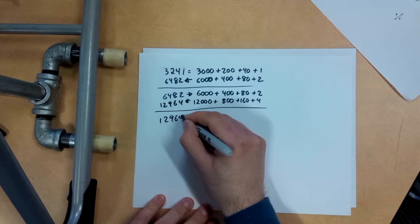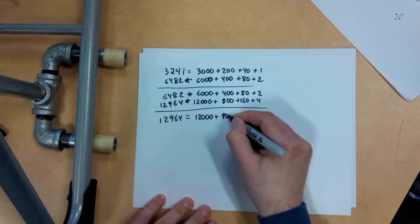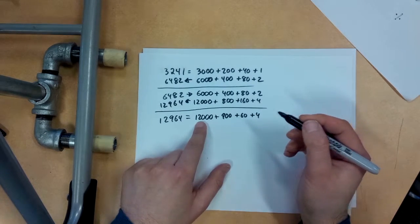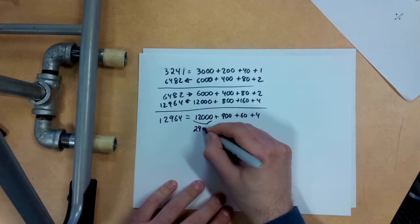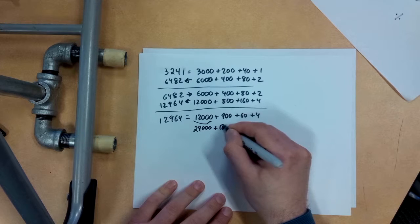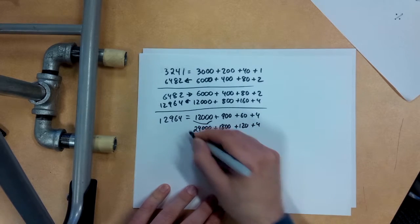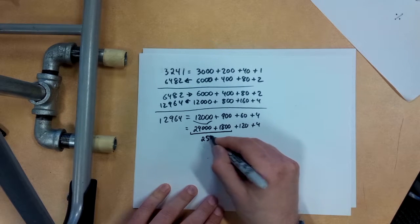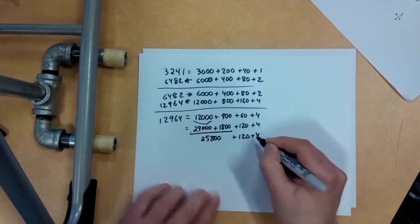I'm going to double that again. 12,964 equals 12,000 plus 900 plus 60 plus 4. I just kept this together instead of stretching it out because I knew it was going to be pretty easy here. If I double that, that's 24,000 plus 1,800 plus 120 plus 4.